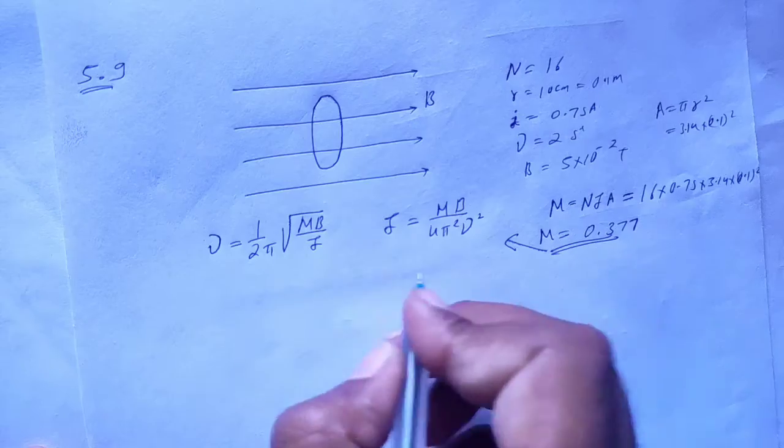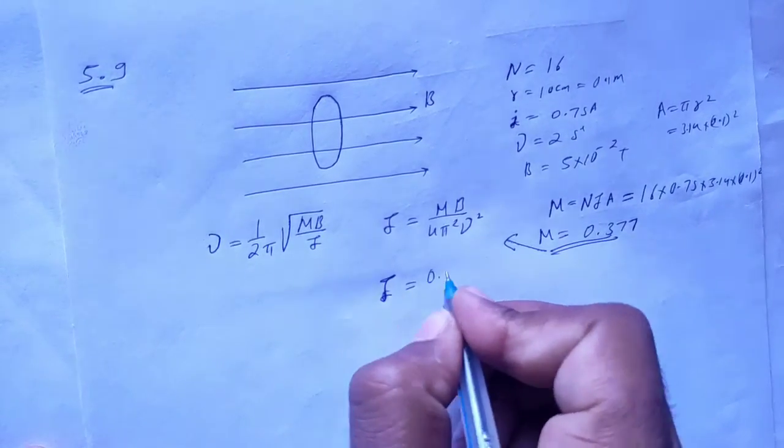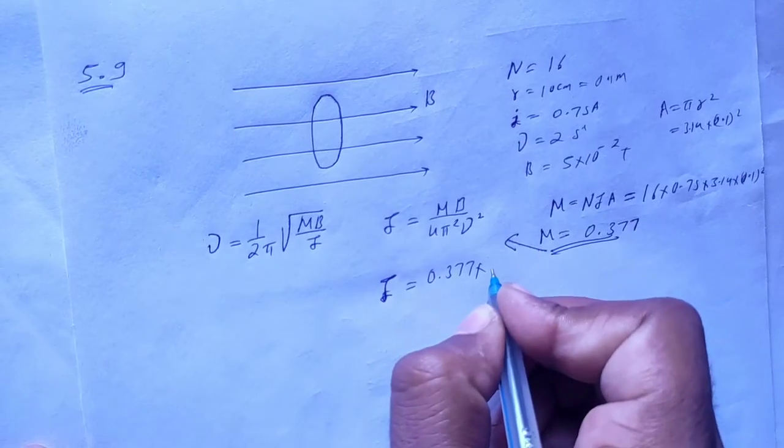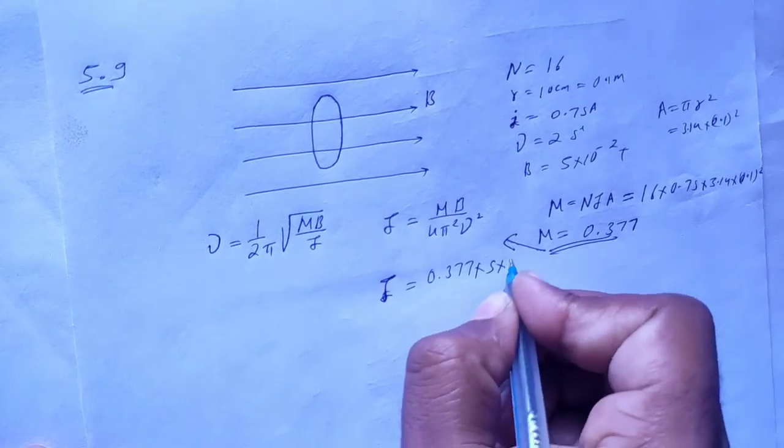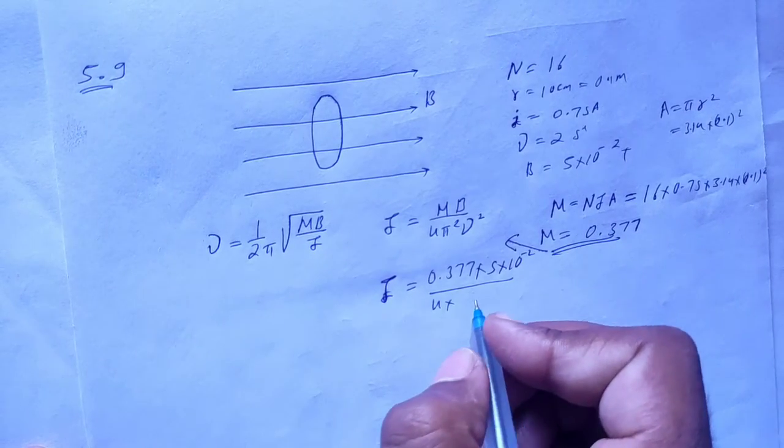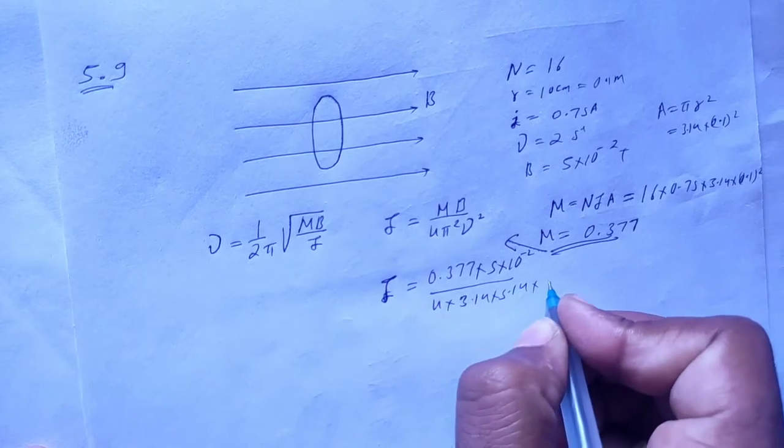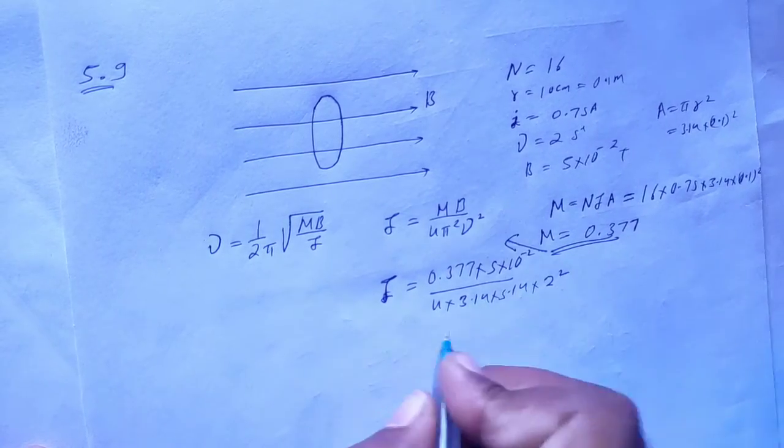So we will put the value here. We will have moment of inertia. 0.377 into b. B is 5 into 10 to the power minus 2. 4 pi square. Pi square is 3.14 into 3.14. And frequency square is 2 square.